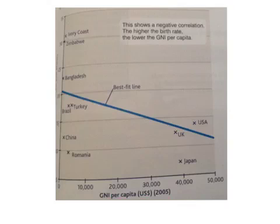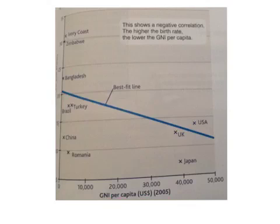Multiple variable indicators may be better. Combining several indicators gives a better view of a country's economic and social status. The Physical Quality of Life Index uses literacy rate, life expectancy, and infant mortality to provide an index of social well-being and quality of life. The Human Development Index, which is the most commonly used indicator of overall development, uses life expectancy, literacy, and incomes to calculate an index value between 0 and 1 — 1 being exceptionally developed, 0 being less developed.